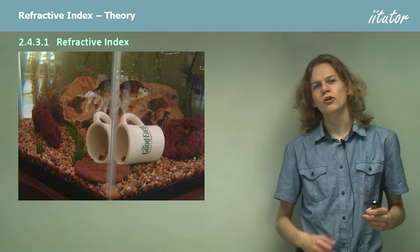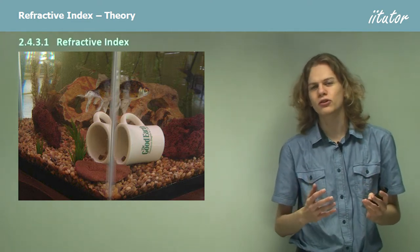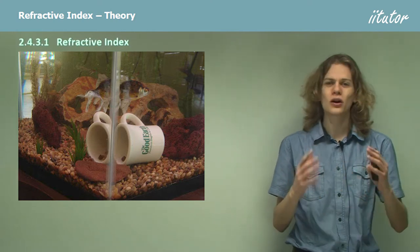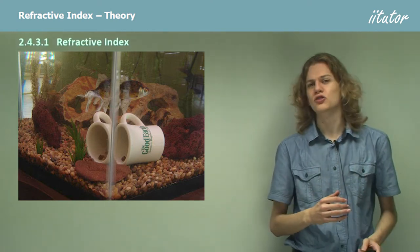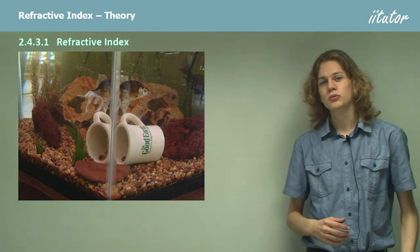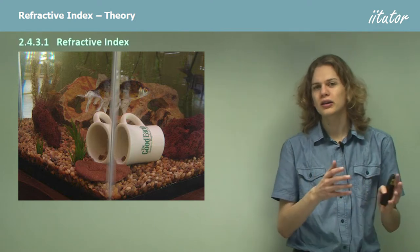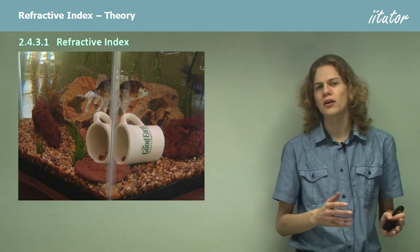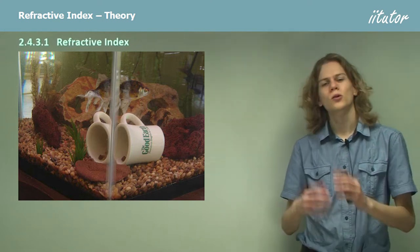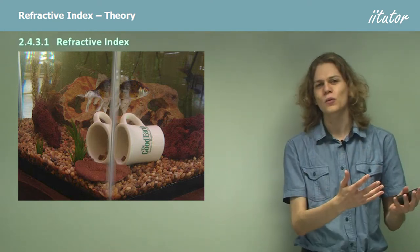We're going to start by learning about the refractive index of different materials. Refractive indices are a way of measuring how much light refracts when it enters a new material. If we have two materials with different refractive indices, the light will bend as it passes from one medium into the other, just as light is bending as it passes out of the water and glass in this photograph into the air.